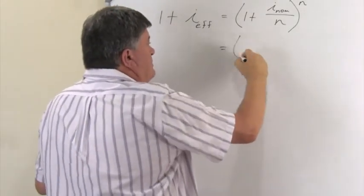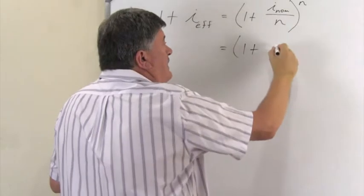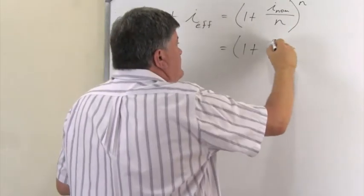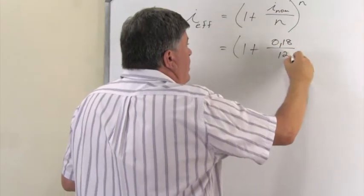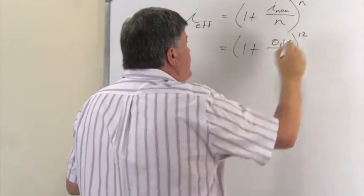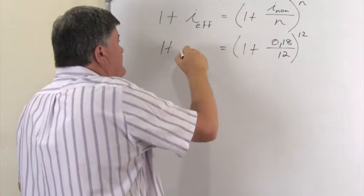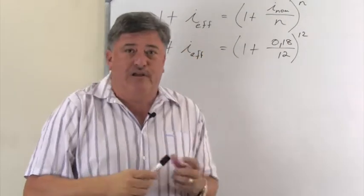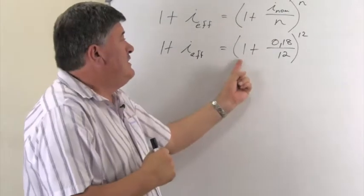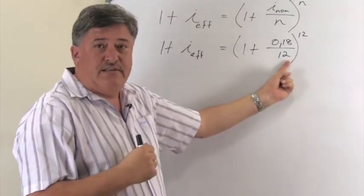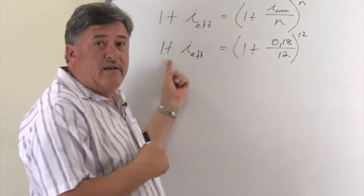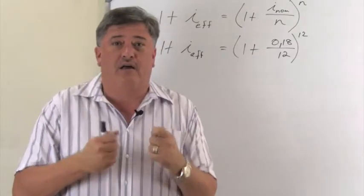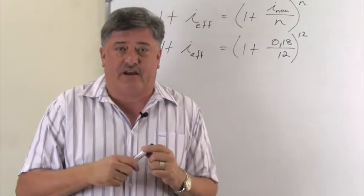So what we will do is, we will say 1 plus, my nominal rate is 18%, we divide it by 100. So it's 0.18 over 12 to the exponent of 12. And that is how we find the effective rate. So we're going to use our calculators. We're going to calculate this bracket. We're going to move this 1 across. So we're going to subtract 1. And that will give us our i for the effective rate.